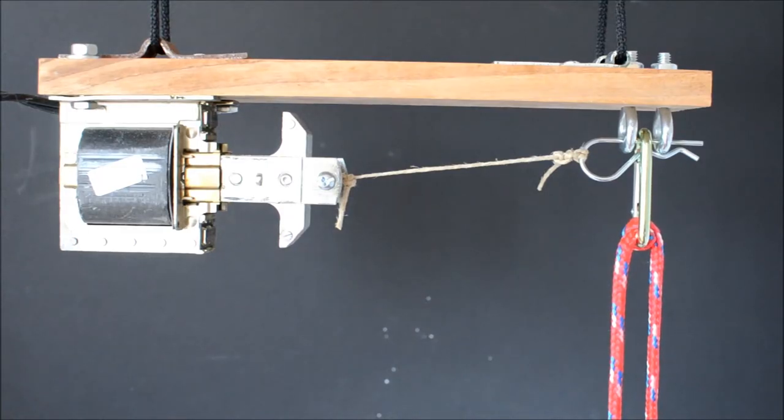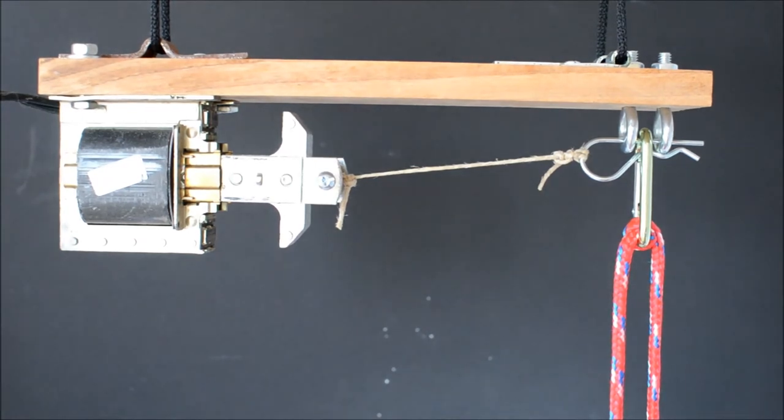A linear solenoid actuator moves a steel plunger when energized. It can either pull it in or push it out. Here, a solenoid pulls the pin for this mechanism, releasing the prop.